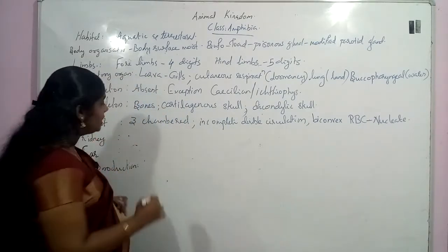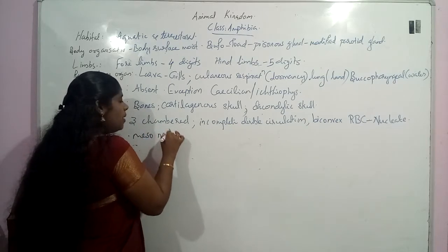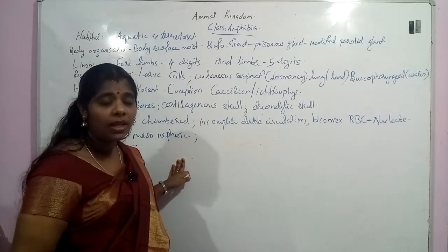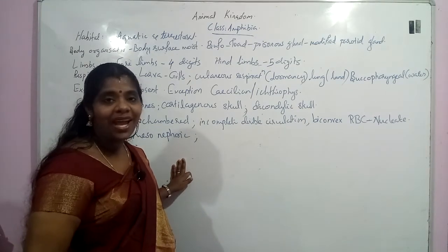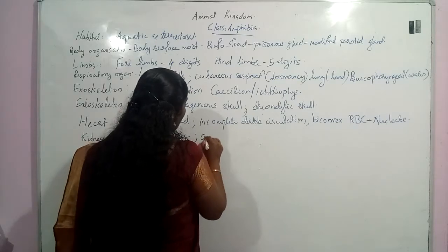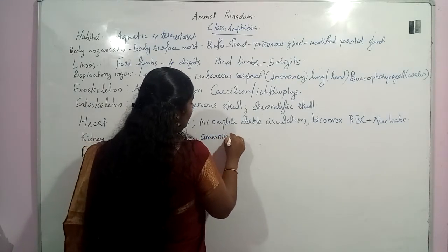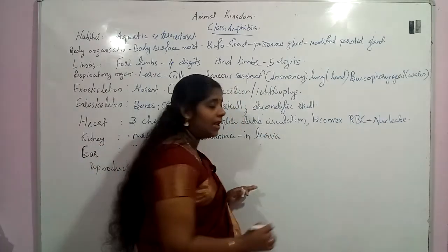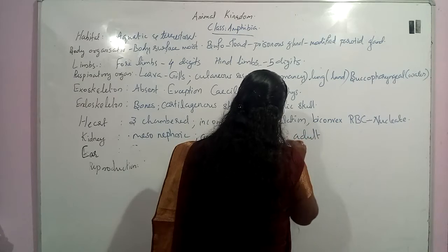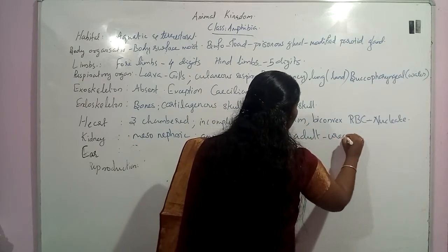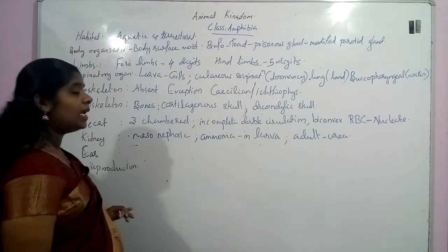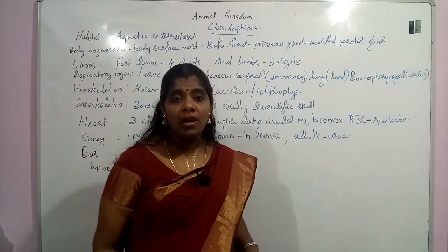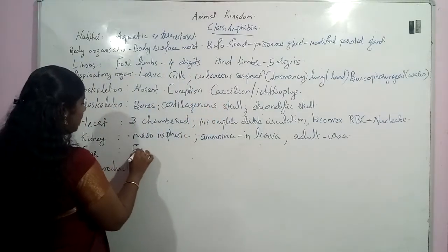The kidney is mesonephric. They will eliminate ammonia during the larval stage and urea during the adult condition. The ear: they do not have an external ear; what represents the external ear is the tympanum.